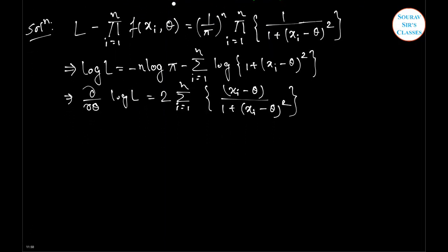Since this cannot be expressed in the form required for an MVB estimator, the MVB estimator does not exist for theta in the Cauchy population, and so the Cramér-Rao lower bound is not attainable by the variance of any unbiased estimator of theta. I repeat: in the Cauchy population, the Cramér-Rao lower bound is not attainable by the variance of any unbiased estimator of theta.